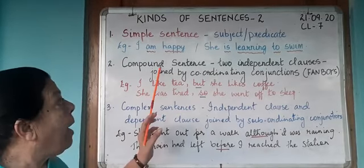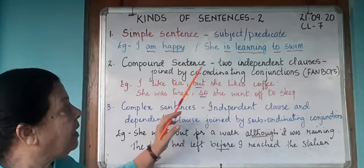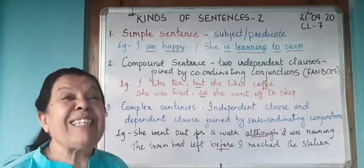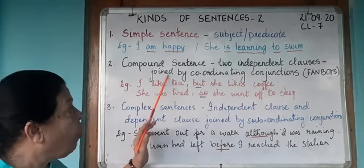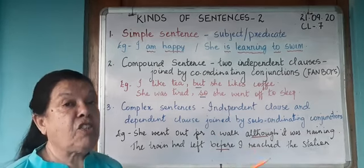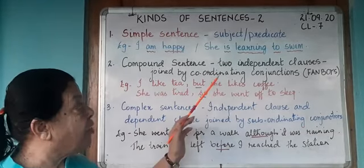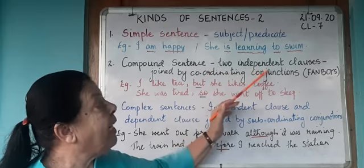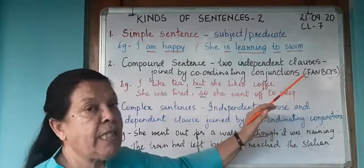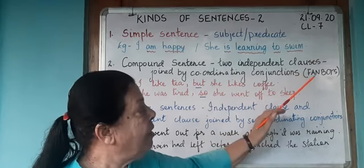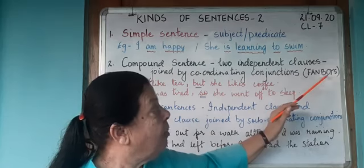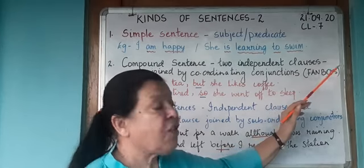Now let's see what is a compound sentence. In a compound sentence you have two independent clauses — or we can say two sentences — and these independent clauses are joined by coordinating conjunctions. Conjunctions are joining words, and the coordinating conjunction joins two independent clauses. I have written here: FANBOYS. FANBOYS stands for the coordinating conjunctions: F for 'for', A for 'and', N for 'nor', B for 'but', O for 'or', Y for 'yet', S for 'so'.